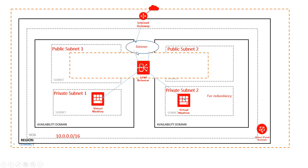Then we'll add the listener. The listener checks for connection requests from the internet and listens to traffic coming in on a certain port — in this case port 80. It will then direct the traffic depending on the load of each server, server 1 or server 2, and according to that it will direct the load to that server.